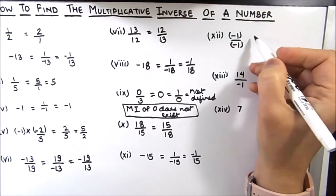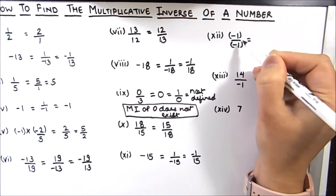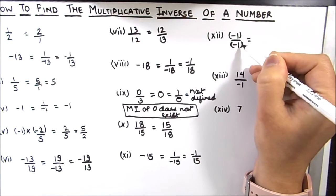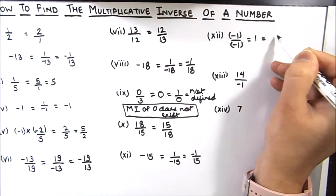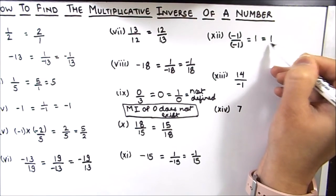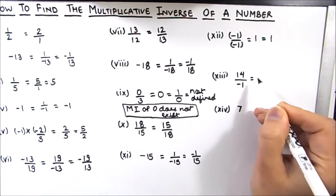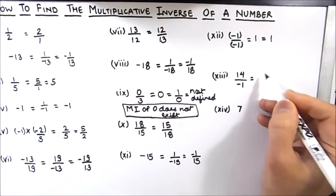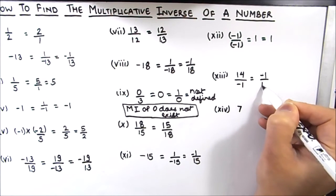The next number is negative 1 divided by negative 1. We will simplify it: negative 1 divided by negative 1 will be 1, and the reciprocal of 1 will be 1. So the multiplicative inverse is 1. The next number is 14 by negative 1 and its reciprocal will be negative 1 by 14.